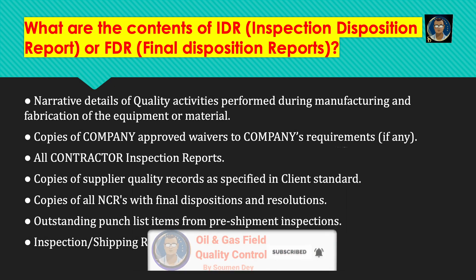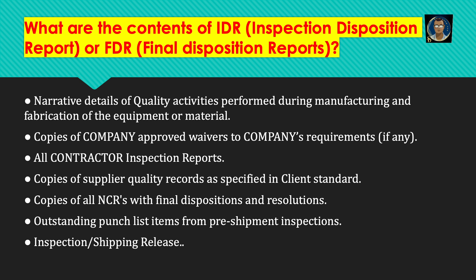What are the contents of an IDR or FDR? Narrative details of quality activities performed during manufacturing or fabrication of the equipment or material; copies of company-approved waivers to company requirements if any; all contractor inspection reports; copies of supplier quality records as specified in client standard; copies of NCR with final disposition and resolutions if any; outstanding punch list items from pre-shipment inspections if any; and inspection and shipping release as the final document.